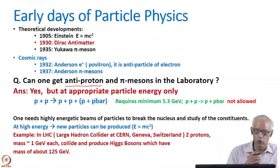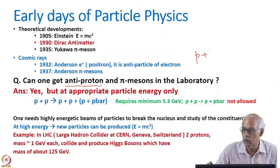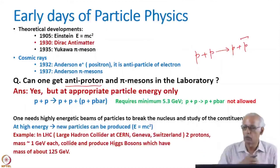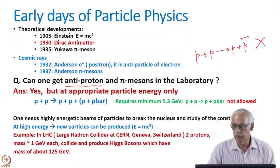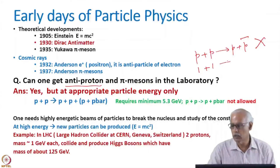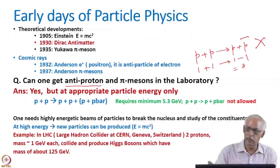For example, if you collide two protons, like in LHC, then you cannot simply make one anti-proton and one proton. This is not allowed. And the reason being that, for example, if you take the charge, then charge is one here plus one, so it becomes two. And charge of anti-proton is minus one. So it becomes zero. So the charge is not conserved. So that reaction is not allowed.